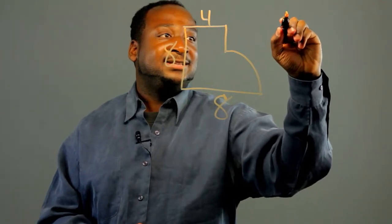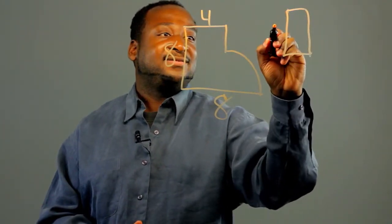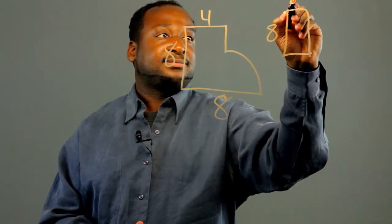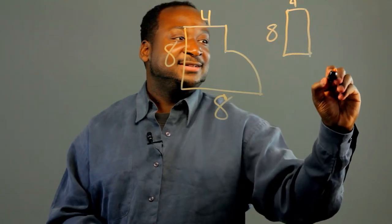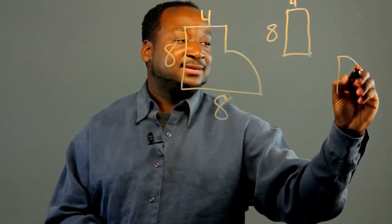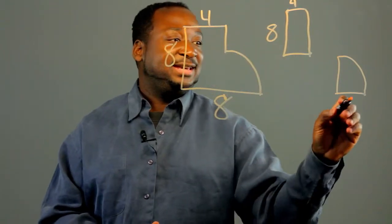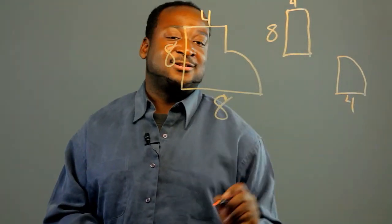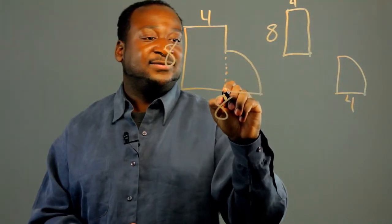And so, in this case, we have an 8x4 rectangle. And in this case, we have a semicircle with a radius of 4 here.